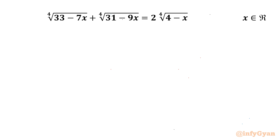Welcome back to Enfigure, my dear friends. In today's video we are going to take up one very interesting and challenging radical equation problem: 4th root of (33 minus 7x) plus 4th root of (31 minus 9x) equals 2 times 4th root of (4 minus x). We have to find real solutions only.